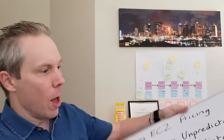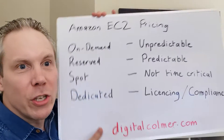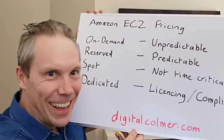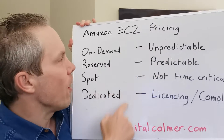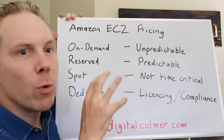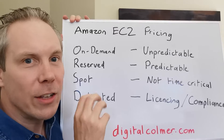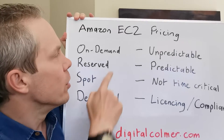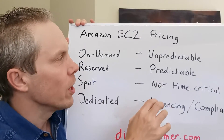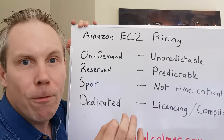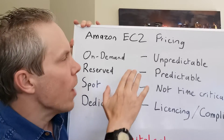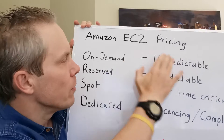Let me bring out my board — this is Bob the board. We have four flavours that we can choose from. The most important thing you want to start with is what type of instance do we need. Do we need an on-demand instance? These are perfect for starting off, and they're perfect when your workload is a little bit unpredictable.